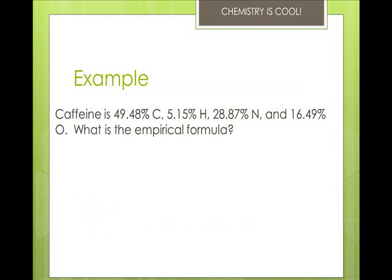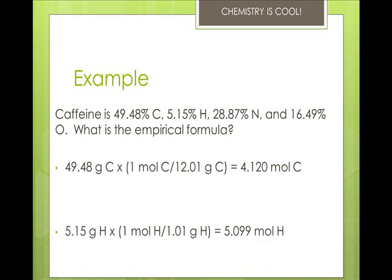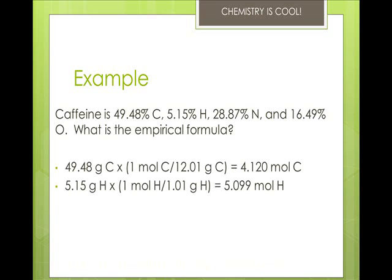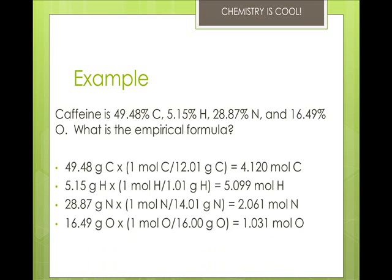Okay, let's take a look at this one. Caffeine is 49.48% carbon, 5.15% hydrogen, 28.87% nitrogen, and 16.49% oxygen. So what is its empirical formula? Well, we again assume 100 grams, so those percentages just become grams. Then we multiply it by the molar weights. So we get 4.120 moles of carbon, 5.099 moles of hydrogen, 2.061 moles of nitrogen, and 1.031 moles of oxygen.